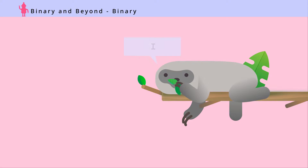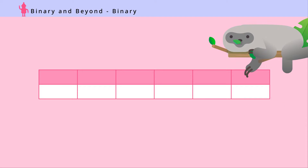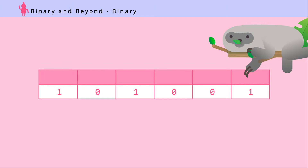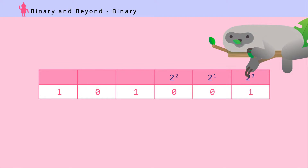Let's figure it out. There are six places in the number 101001. Step one: write it out. Step two: on top of each digit, put the binary place values starting from the very right — two to the zero, two to the one, two to the two, two to the three, two to the four, and two to the five.